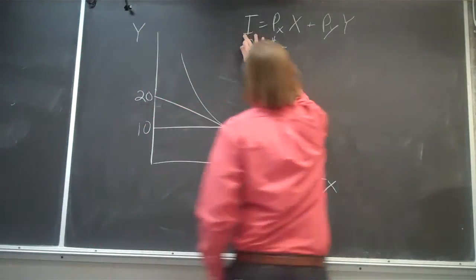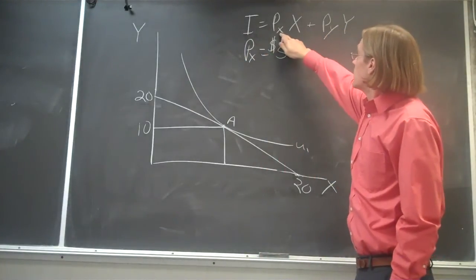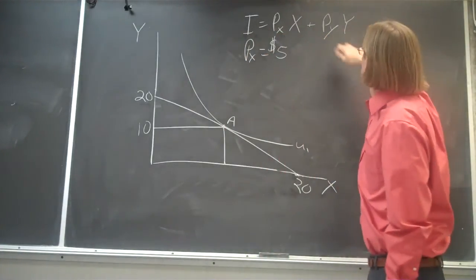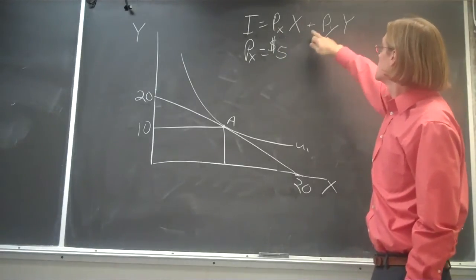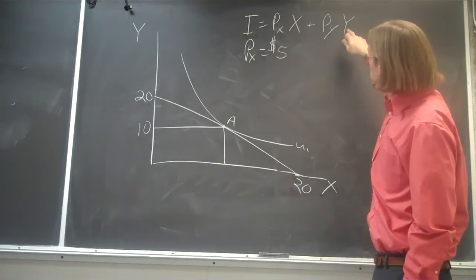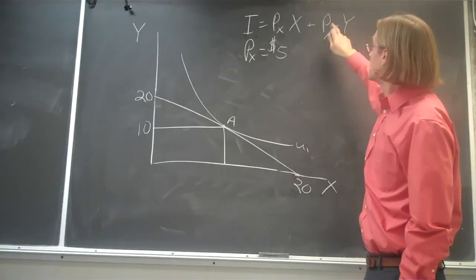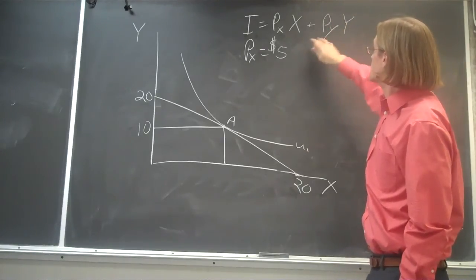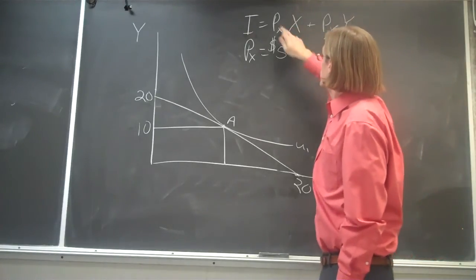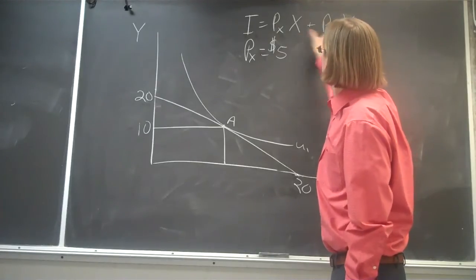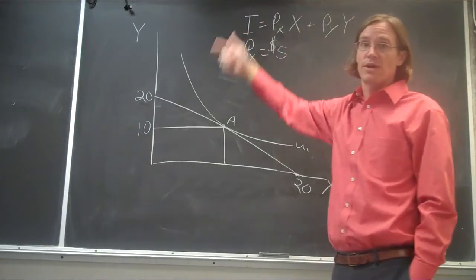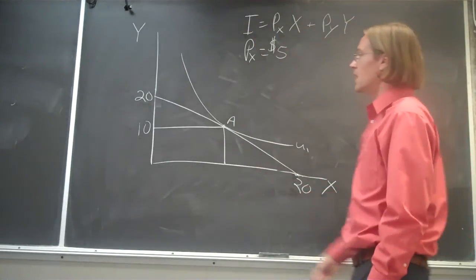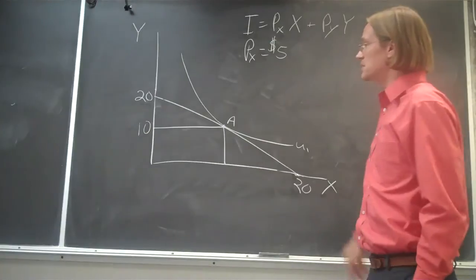Our income is determined by the amount of good Y, the amount of good X we're going to buy, and the price of good X plus the number of units of good Y we're going to buy times the price of good Y. So this is the amount of money we're spending on good X and the amount of money we're spending on good Y summed together will be all of our income. If we spend all of our money, then we're on this budget line.